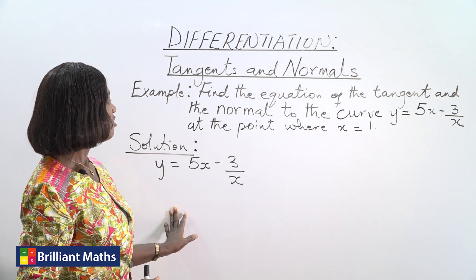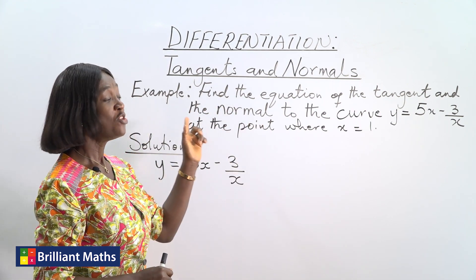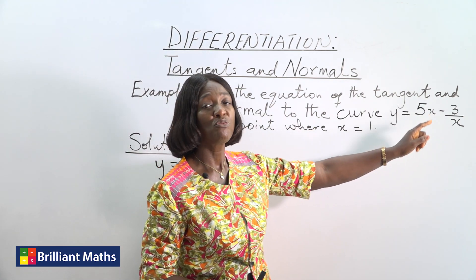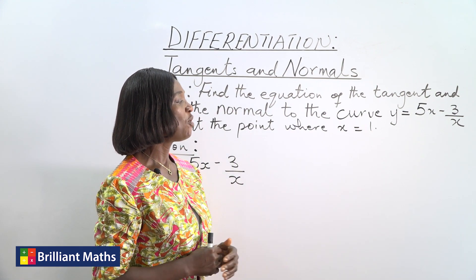Tangents and normals. Find the equation of the tangent and the normal to the curve y = 5x - 3/x at the point where x = 1.